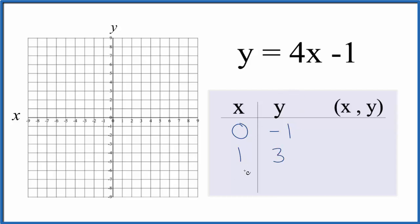And then how about negative 1? 4 times negative 1, that's negative 4, plus the negative 1, that's negative 5. So these are the points that we'll graph for the linear equation y equals 4x minus 1.